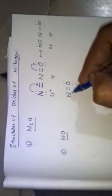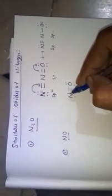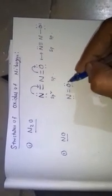Second oxide: Nitric Oxide NO. Structure: N double bond O. When Oxygen forms a double bond, it contains 2 lone pairs. Nitrogen contains a total of 5 valence electrons — 1 lone pair and 3 unpaired — out of which 2 are used for bond formation, leaving 1 unpaired electron.